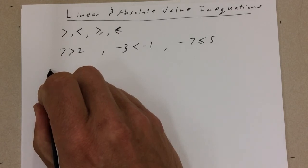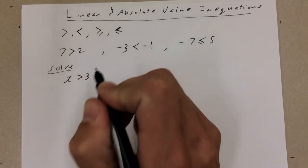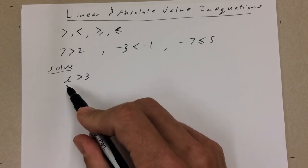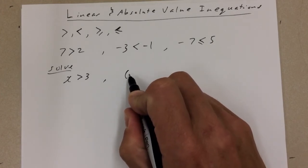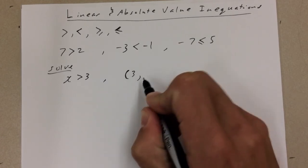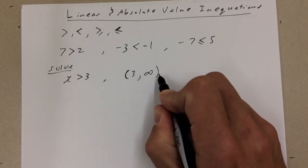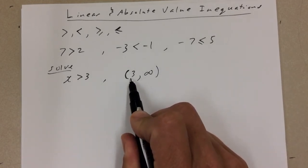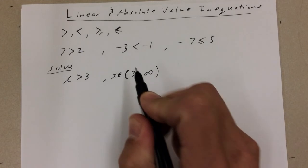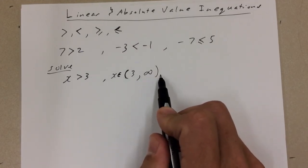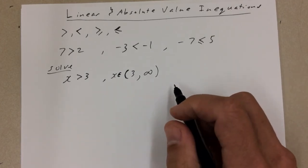If you wanted to solve an inequality like x is greater than 3, that is itself a solution — all x values greater than 3. We have some notations we can use. Interval notation looks like a coordinate of a point — two things in brackets with a comma between them, but it means something different. So x is contained in the interval from 3 to infinity. The round bracket means it doesn't include 3, and you can never include infinity because infinity doesn't exist.